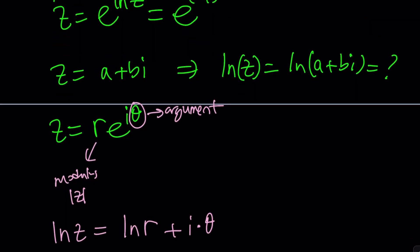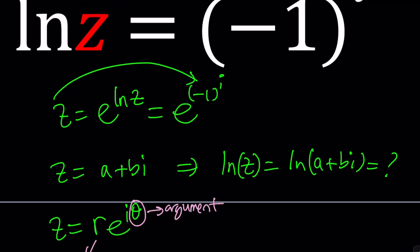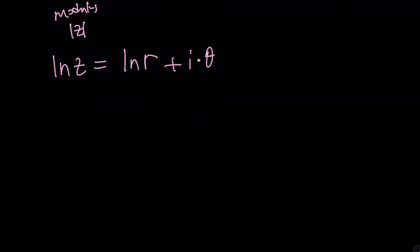So you can go ahead and replace z with that. Is that going to help you? Not really. I mean, you can try ln r plus i theta equals negative one to the power i. So here's the problem. We were able to express the left hand side as a complex number in standard form, like a plus bi form.